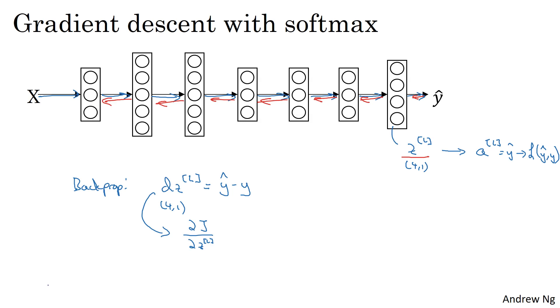But it turns out that in this week's programming exercise, we'll start to use one of the deep learning programming frameworks. And for those programming frameworks, usually it turns out you just need to focus on getting the forward prop right. And so long as you specify the programming framework the forward prop pass, the programming framework will figure out how to do back prop, how to do the backward pass for you. So this expression is worth keeping in mind for if you ever need to implement softmax regression or softmax classification from scratch. Although you won't actually need this in this week's programming exercise, because the programming framework you use will take care of this derivative computation for you.